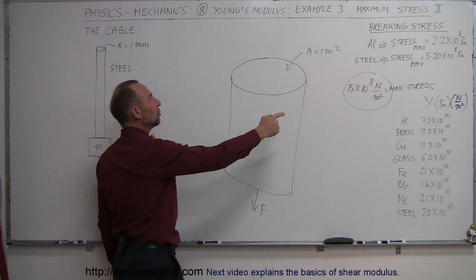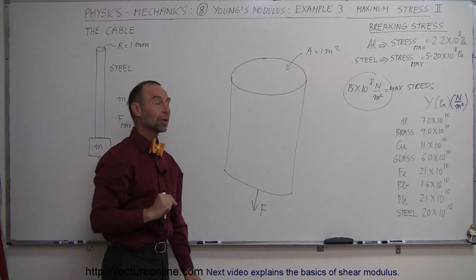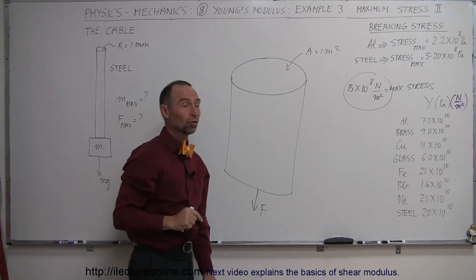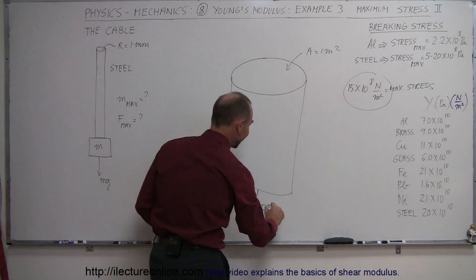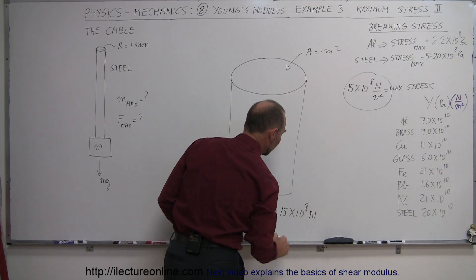And so if we then unitize the cross-sectional area to 1 square meter, the maximum force that we can apply would be 15 times 10 to the 8 newtons because it's defined by per square meter.